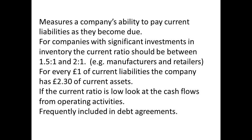For every £1 of current liabilities there are £2.3 of current assets available. This is a measurement of an entity's ability to meet its current liabilities. For manufacturers and retailers a figure of between 1.5 to 2 is considered healthy. If the figure is below this, the next statement to examine would be the cash flows from operating activities. The current ratio is considered important when structuring debt agreements.